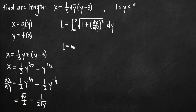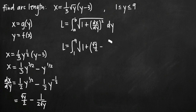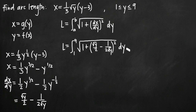The arc length is equal to the integral from 1 to 9 of the square root of 1 plus our derivative squared, dy. So we have the integral from 1 to 9 of the square root of 1 plus the quantity (square root of y over 2 minus 1 over 2 root y) squared, dy. Now we need to simplify what's underneath the square root sign to get the integral into a form we can evaluate.